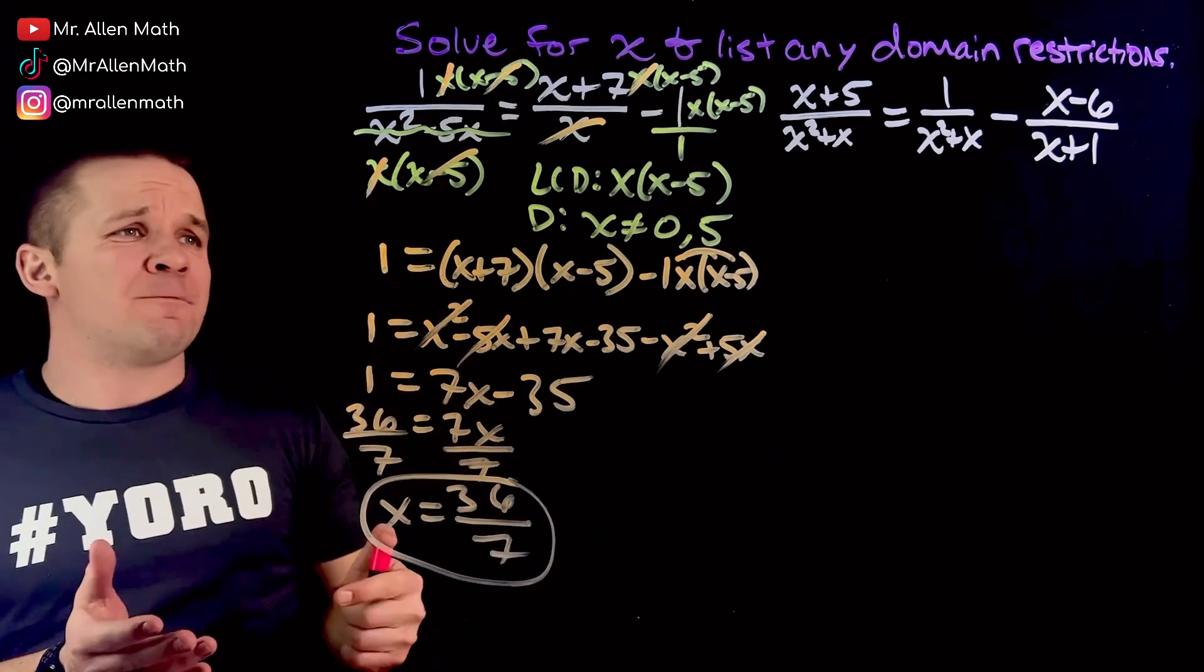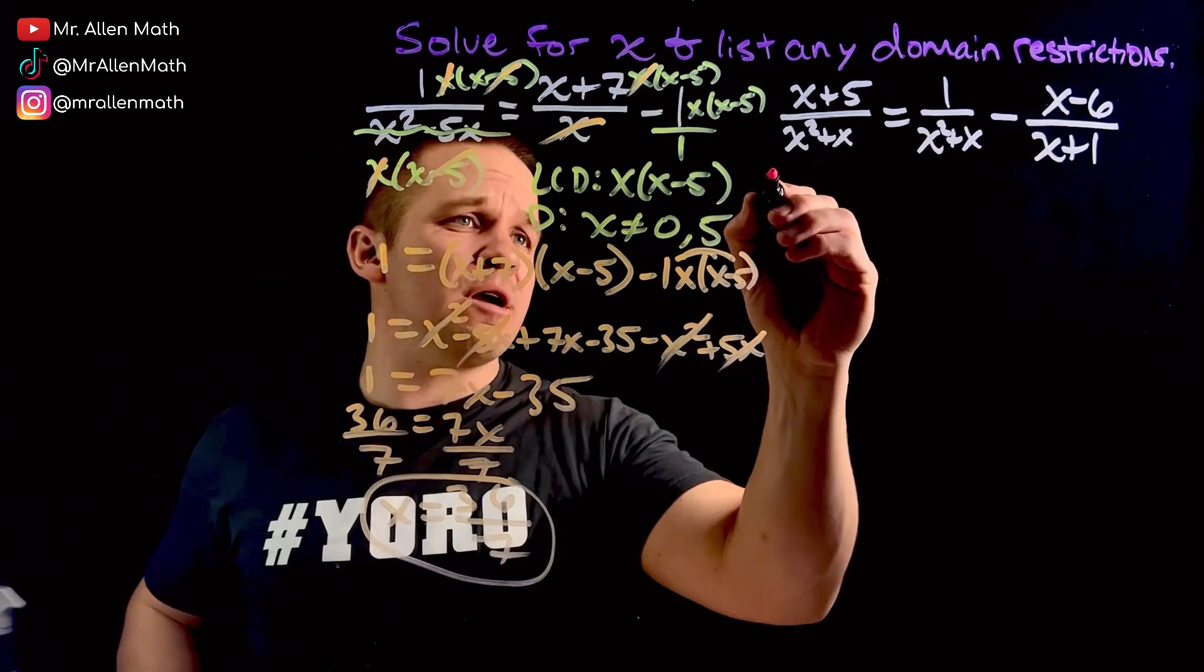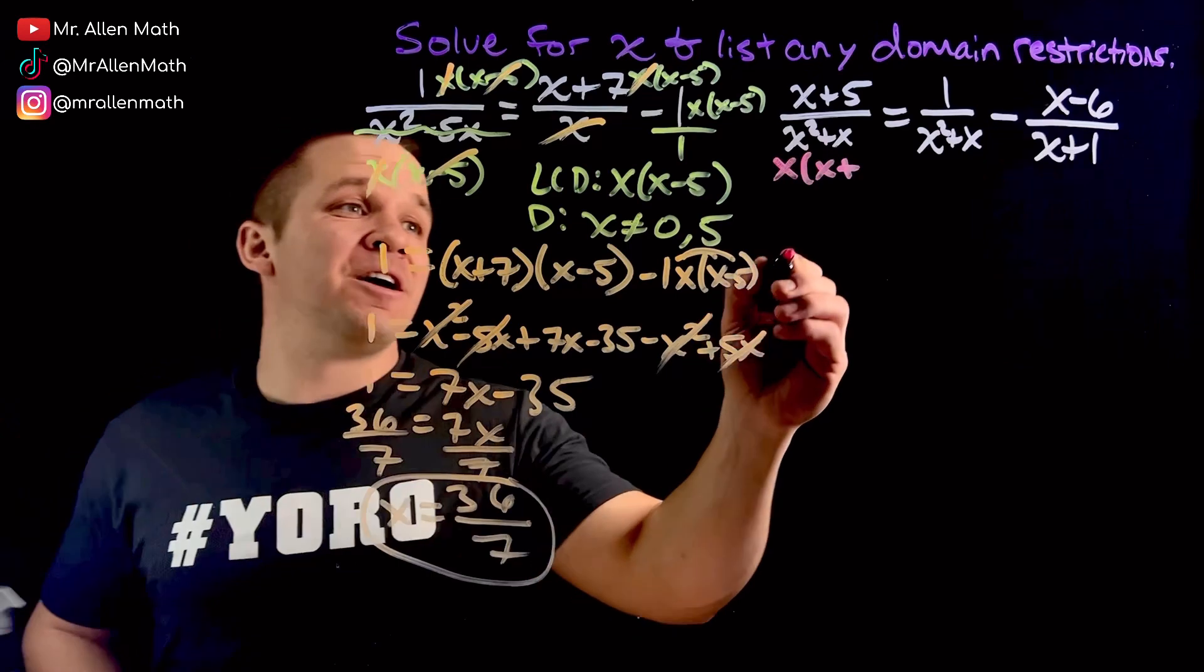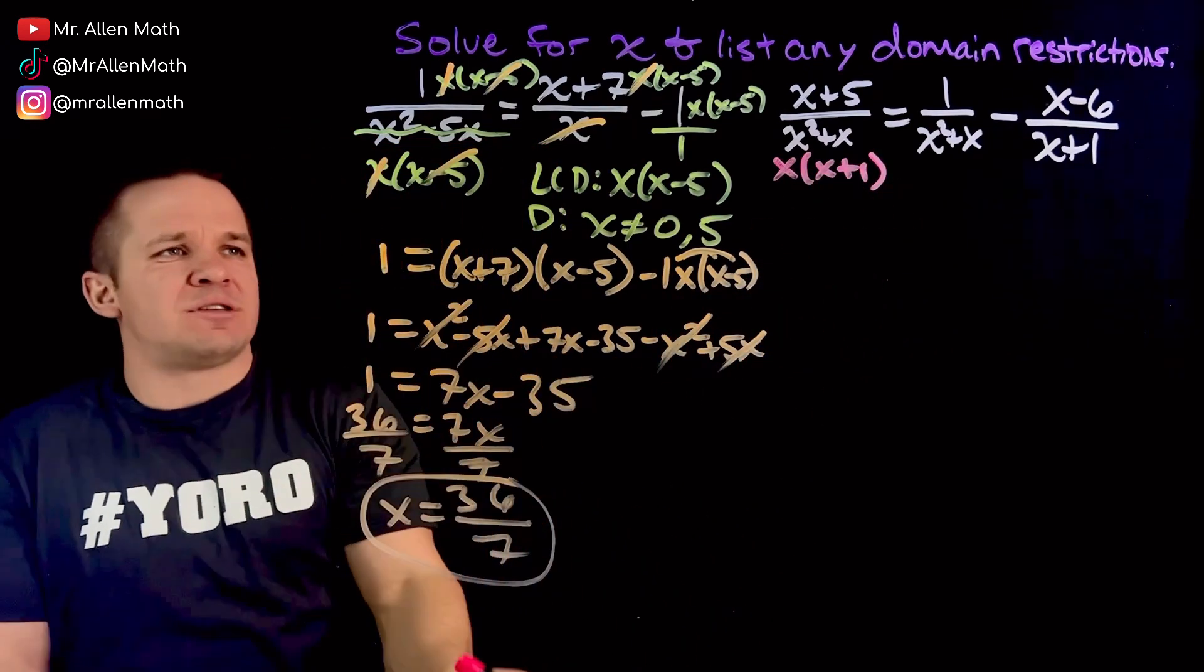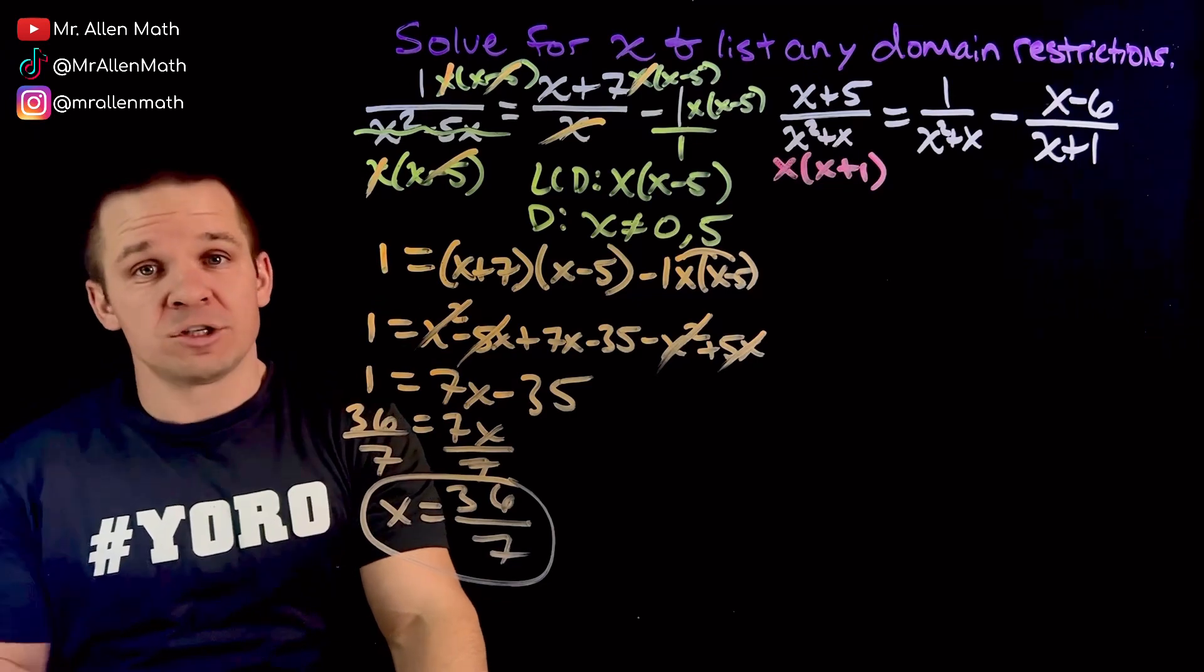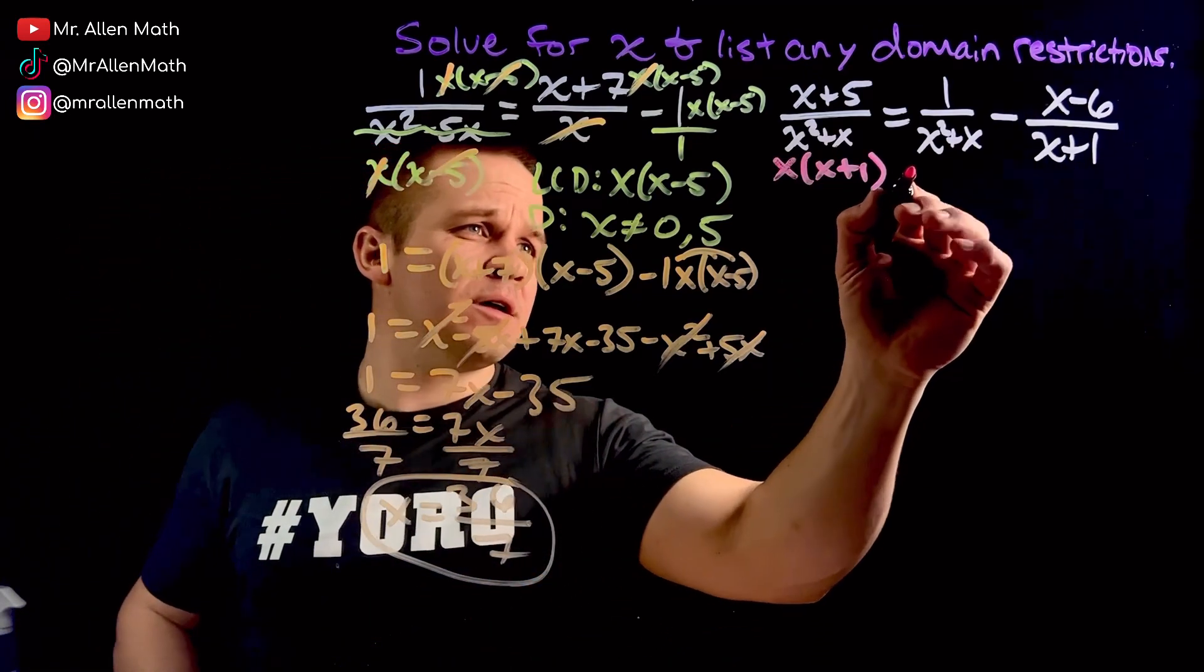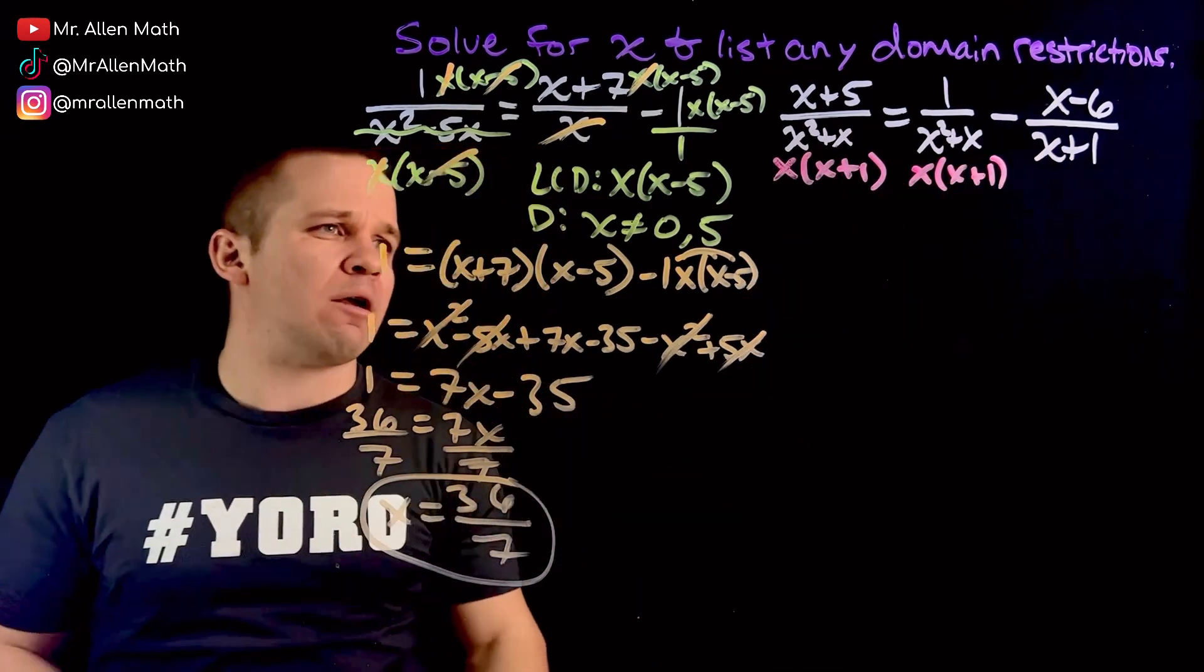All right. Same kind of idea here. I got to find my LCD and to do so, I should factor. First one here, I can take an x out and I'm left with x plus 1. Do not forget that. Sometimes people see like the x is coming out. They're like, oh, just x. No, there's a placeholder. There's a 1 there. Don't forget that. Over here, same deal. x times x plus 1. And this one's already set, ready to rock and roll.